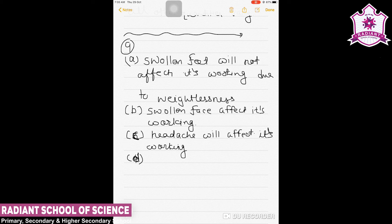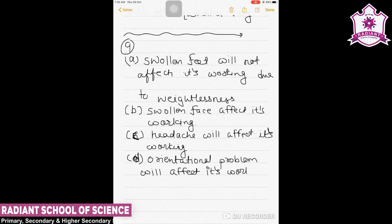Space also has orientation and frames of reference, so orientational problems will affect the astronaut in space. Orientational problems will affect working in space. This completes example number nine.